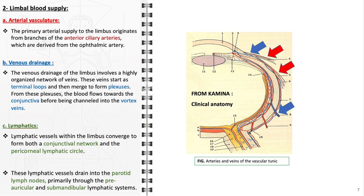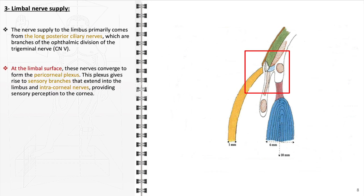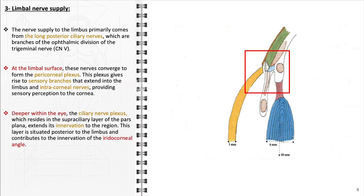The limbal nerve supply originates primarily from the long posterior ciliary nerves, key branches of the ophthalmic division of the trigeminal nerve (cranial nerve V). Upon reaching the limbal surface, these nerves coalesce to form the pericorneal plexus, a significant neural network surrounding the cornea. This plexus branches off into smaller sensory nerves which penetrate into the limbus and extend into the cornea, providing sensory innervation enabling sensations like pain, touch, and temperature. Beyond the superficial layers, the ciliary nerve plexus, located in the deeper supraciliary layer of the pars plana, extends its branches to the iridocorneal angle and adjacent regions, contributing to the innervation of these structures.